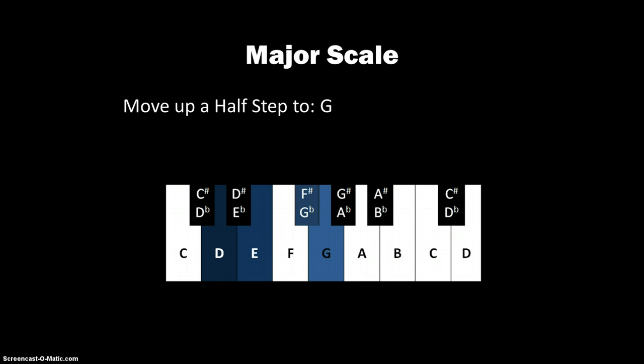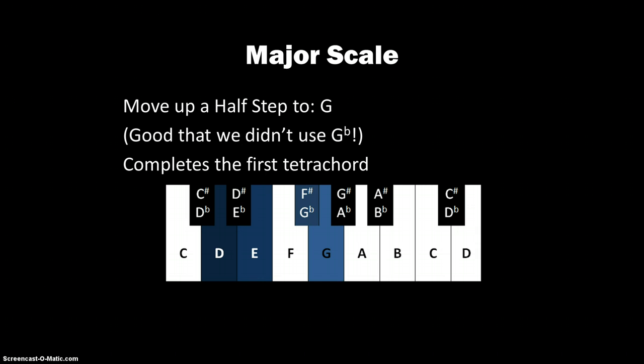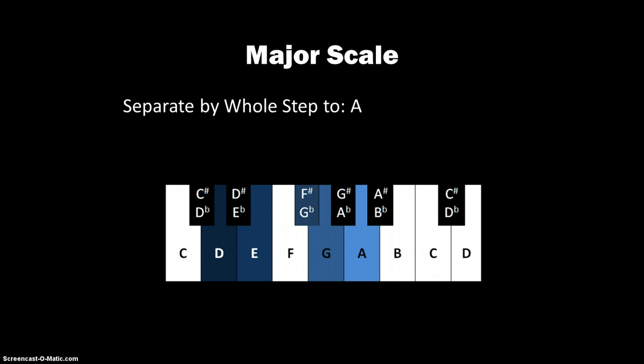After that, we move up a half step to G, and that finishes our first tetrachord. And it's a good thing that we didn't use G flat, because that would have given us two different Gs. That is not allowed. We're going to move up a whole step from there to A, and A is going to begin our next tetrachord.